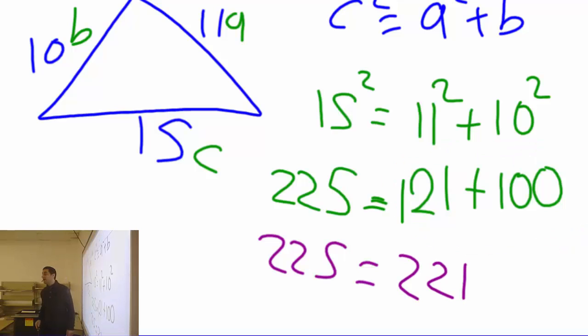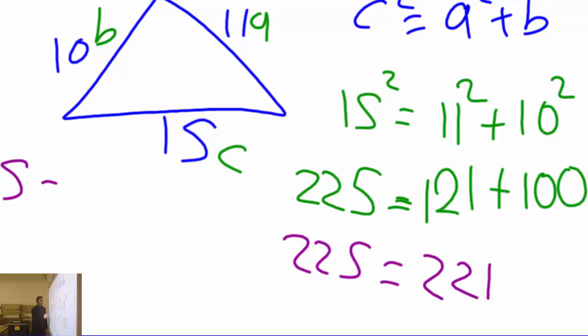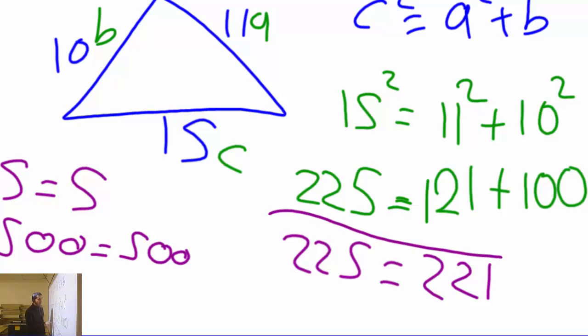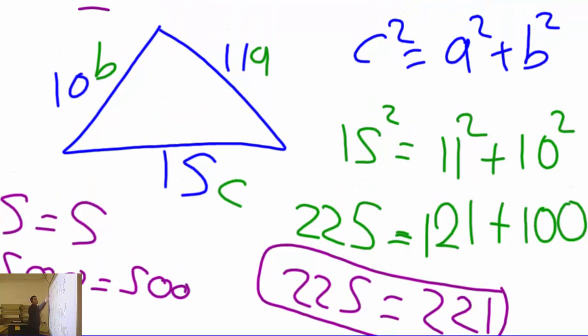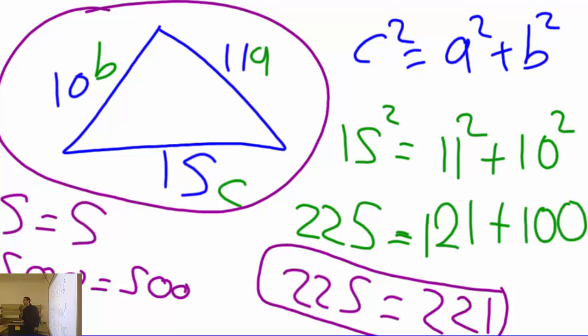So 225 equals to 221 doesn't make sense. 5 equals 5 does make sense, 500 equals 500 does make sense. But 225 is not equal to 221. Therefore, that is not a right triangle. There is no 90 degree here. Maybe there is 89 degrees, because it's very close to be a right triangle, maybe there is 91 degrees. But all I know, there is no 90 degree here. So if there is no 90 degree, this is not a right triangle.